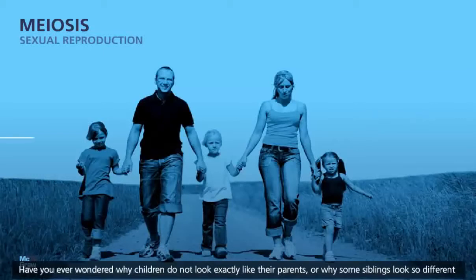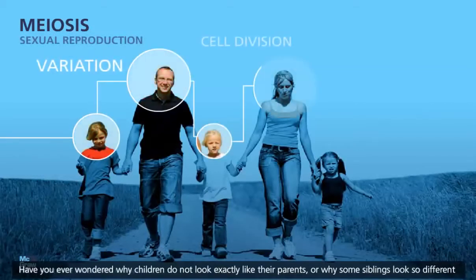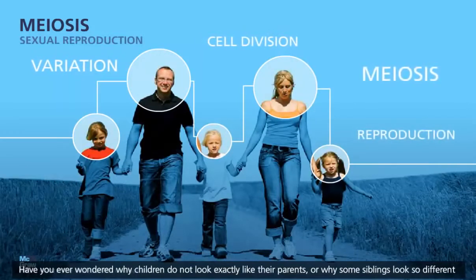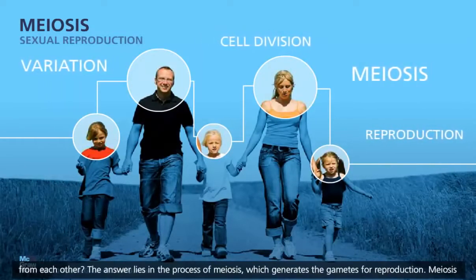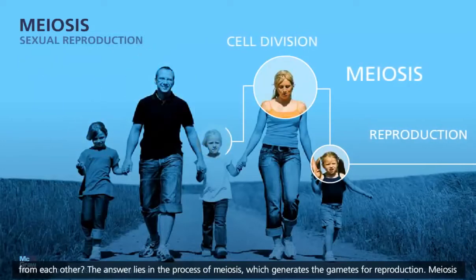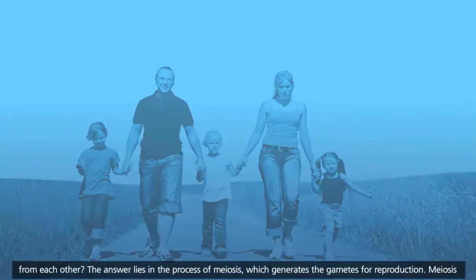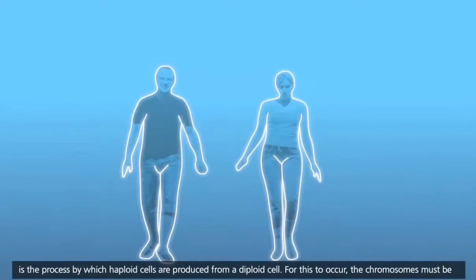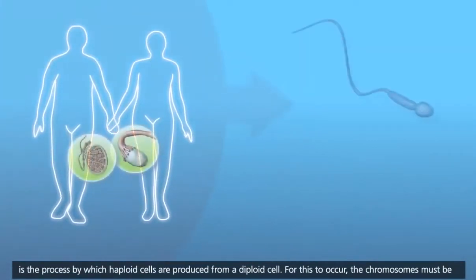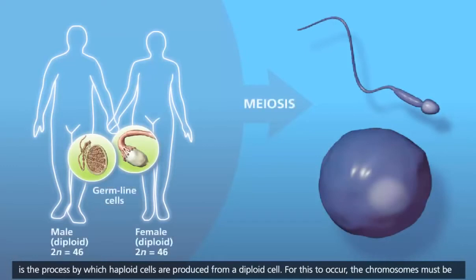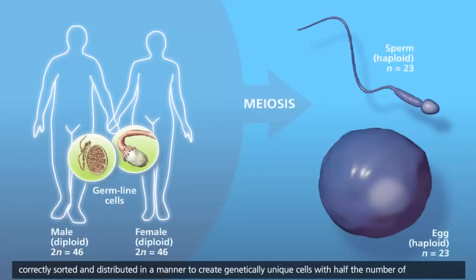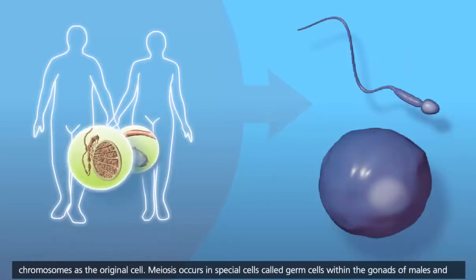Have you ever wondered why children do not look exactly like their parents, or why some siblings look so different from each other? The answer lies in the process of meiosis, which generates the gametes for reproduction. Meiosis is the process by which haploid cells are produced from a diploid cell. For this to occur, the chromosomes must be correctly sorted and distributed to create genetically unique cells with half the number of chromosomes as the original cell.